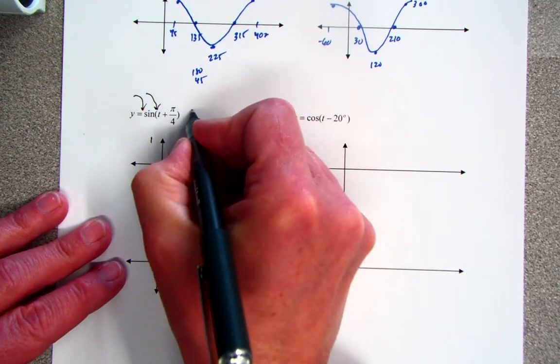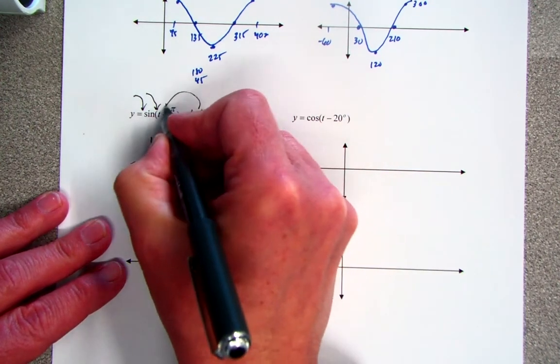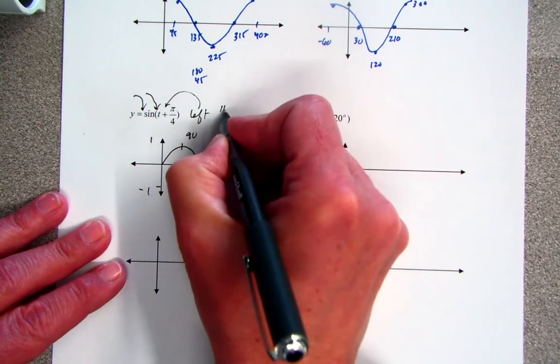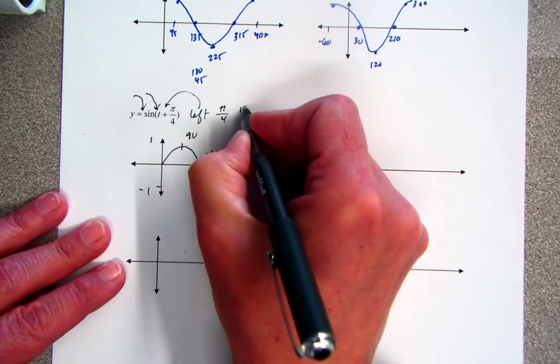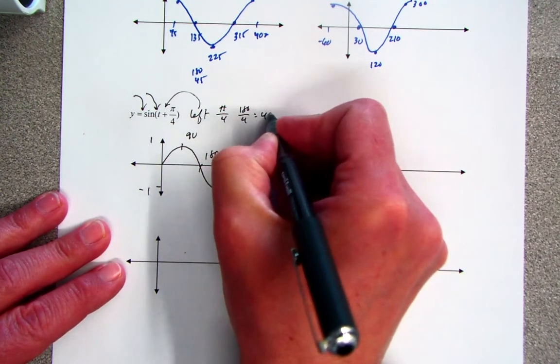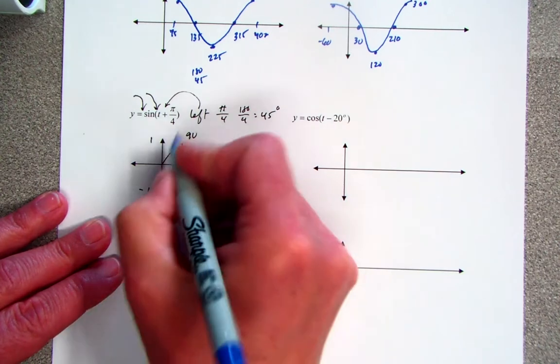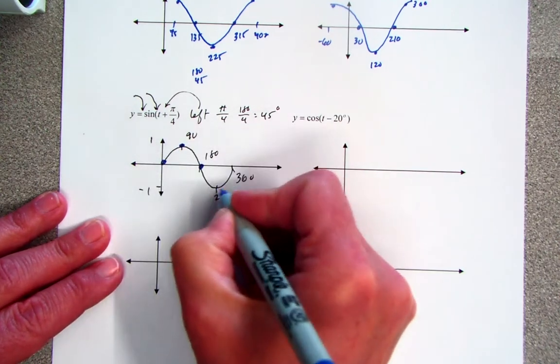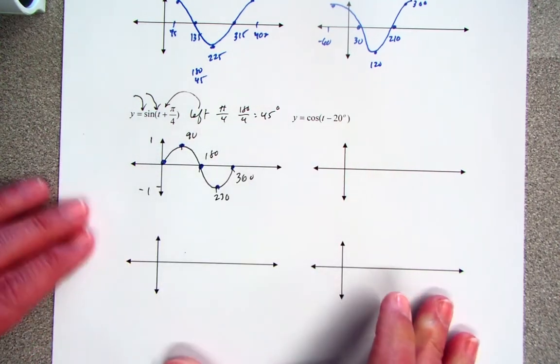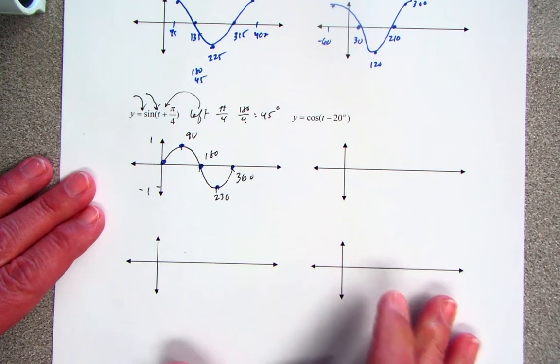And this says you're going to move this thing to the left, opposite of what you think it might be, pi over 4. Well, pi over 4 is 180 divided by 4, which is 45 degrees. So I again will take these important points right here, the ones that are easy to find, and move them to the left 45.